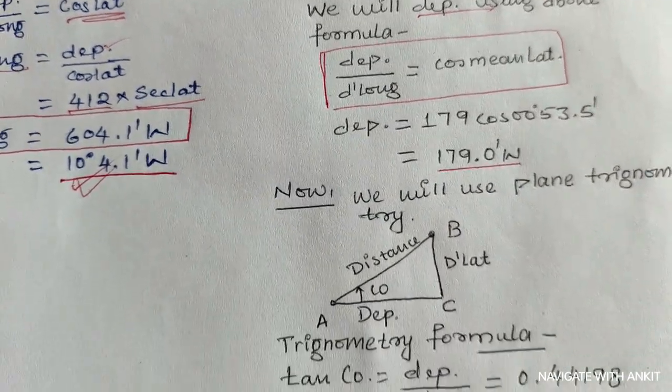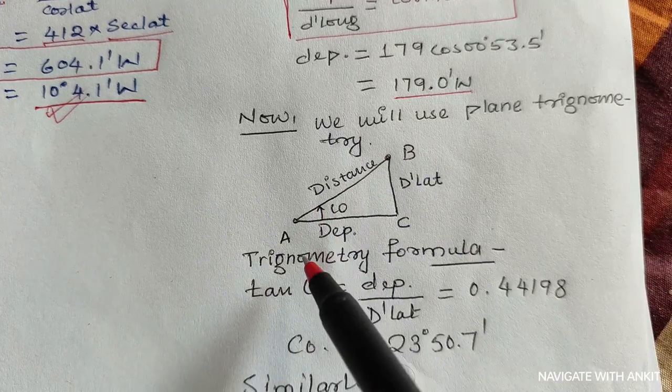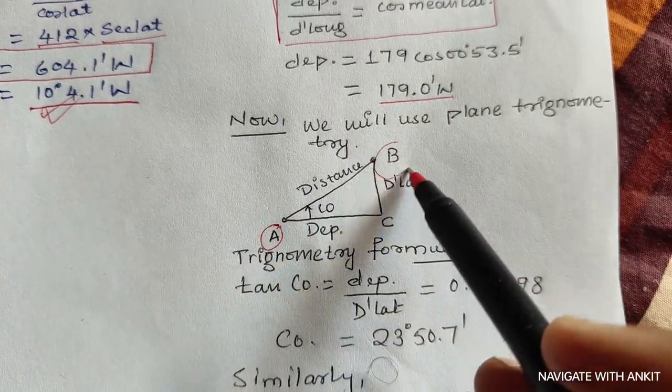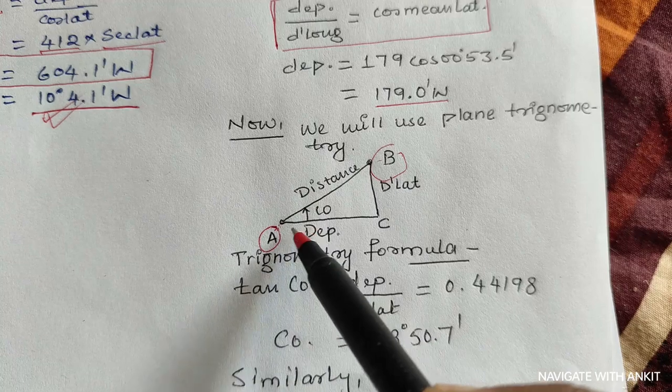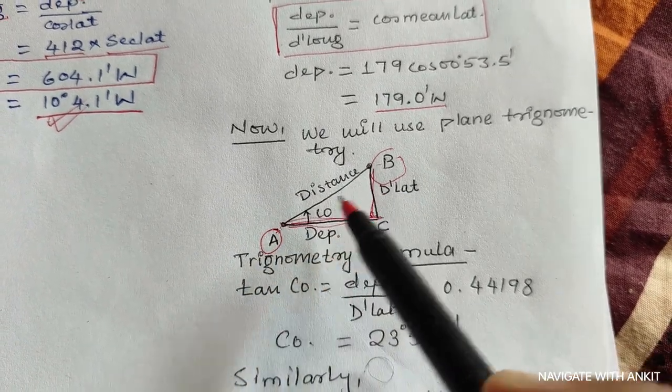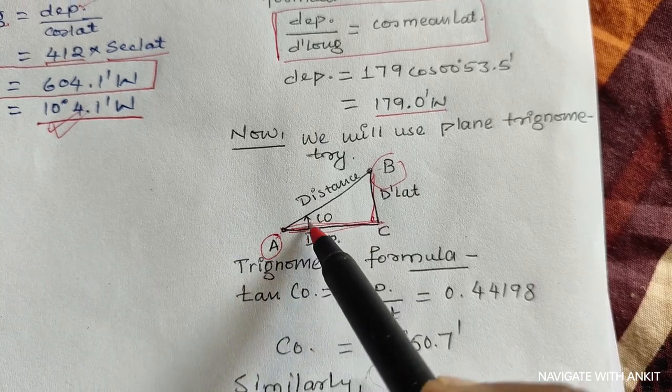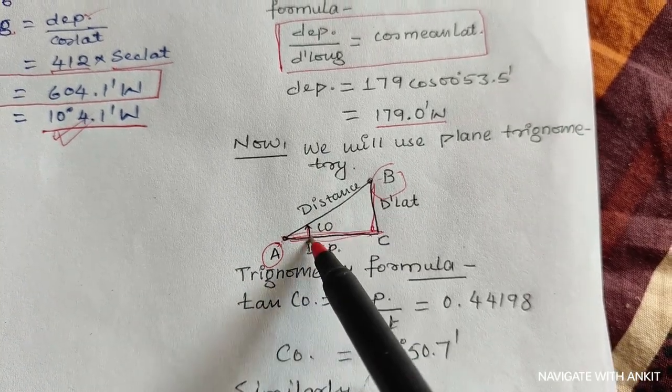So now we will use the plane trigonometric formula and draw the plane sailing triangle. This is position A, this is position B, and between them is the distance. This is the departure, this is the D'lat. AC is departure, CB is D'lat, and angle BAC is the course.